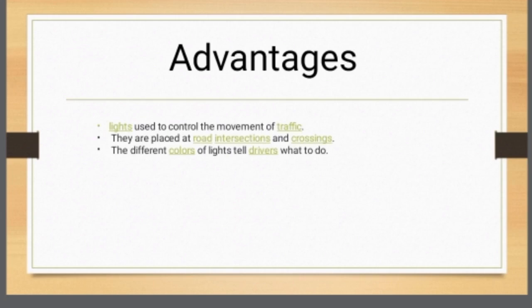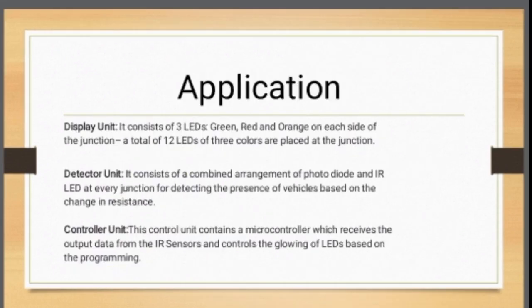Advantages: Lights are used to control the movement of traffic; they are placed at road intersections and crossings. The different colors of light tell drivers what to do. Application — Display Unit: consists of three LEDs — green, red, and orange — on each side of the junction. Detector Unit: a combined arrangement of a photodiode and IR LED at every junction for detecting the presence of vehicles based on change in resistance. Controller Unit: contains a microcontroller which receives output data from the IR sensor and controls the glowing of LEDs based on programming.